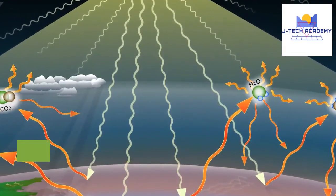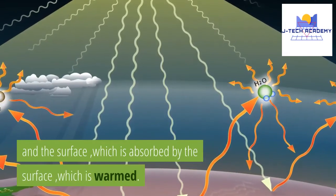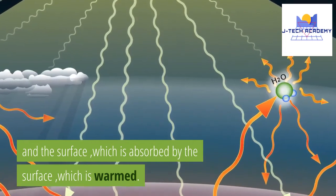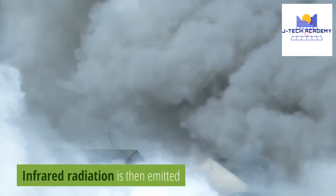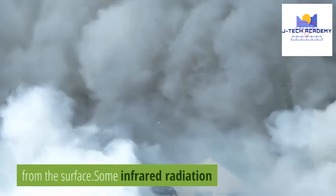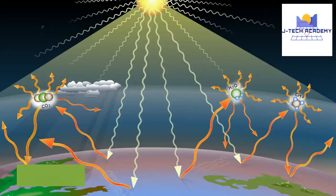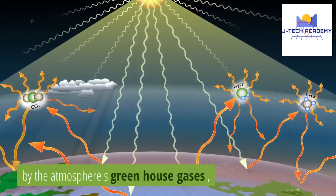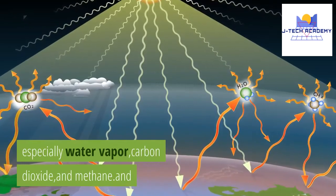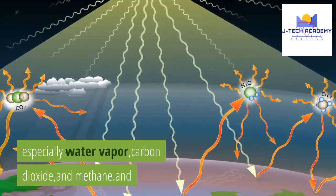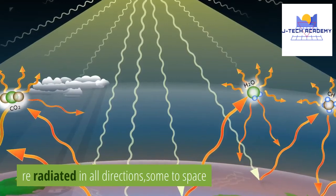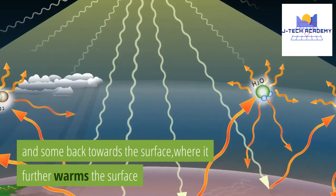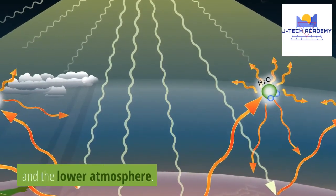Some incoming sunlight is reflected by Earth's atmosphere and surface, while some is absorbed by the surface, which is warmed. Infrared radiation is then emitted from the surface. Some infrared radiation escapes to space, but some is absorbed by the atmosphere's greenhouse gases — especially water vapor, carbon dioxide, and methane — and re-radiated in all directions, some to space and some back towards the surface, where it further warms the surface and the lower atmosphere.